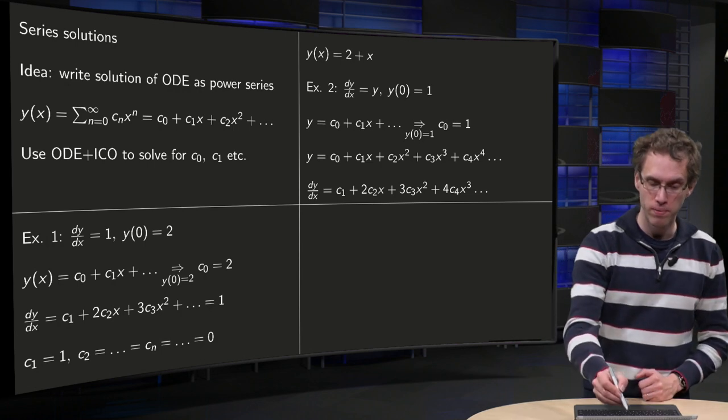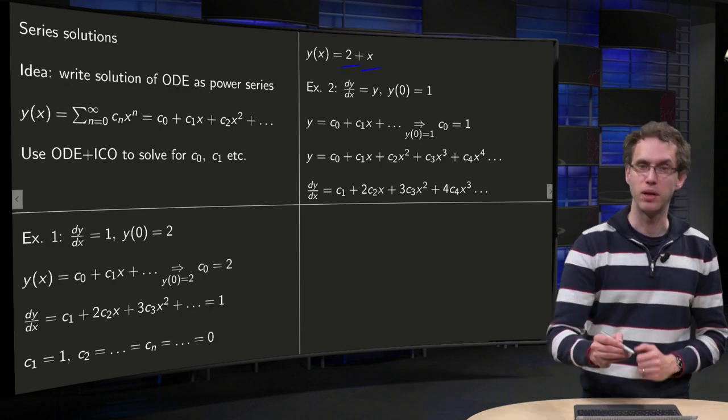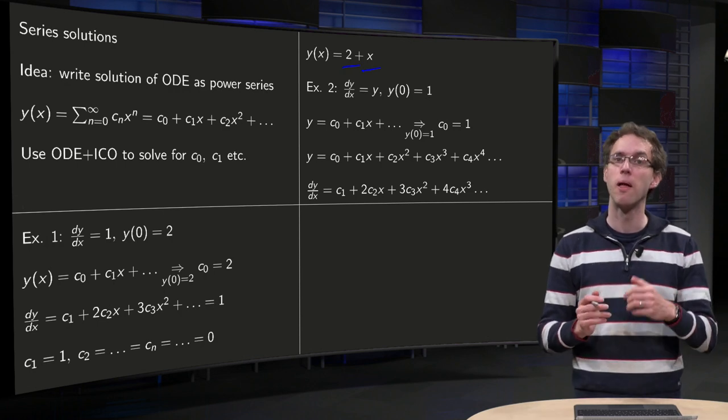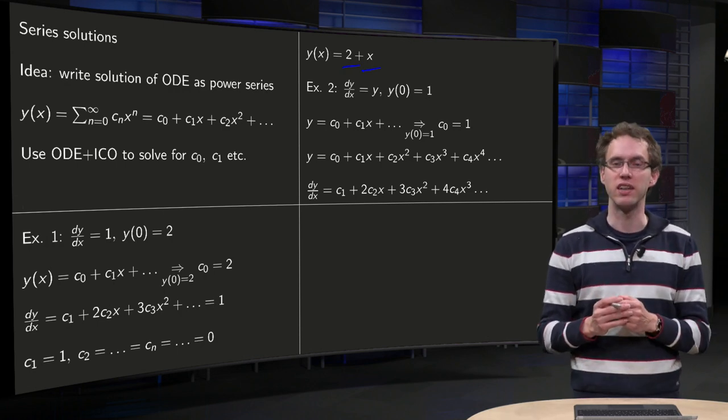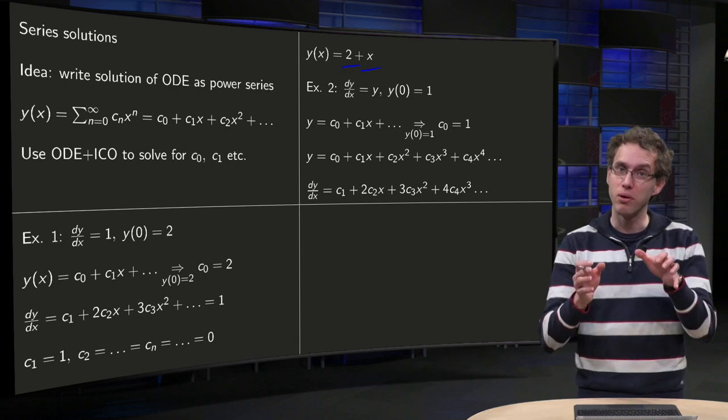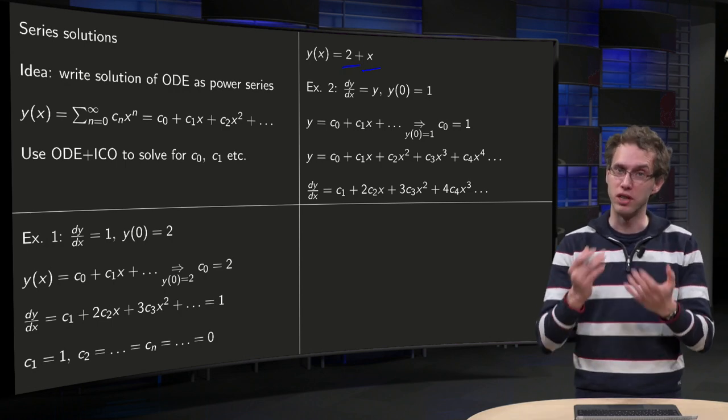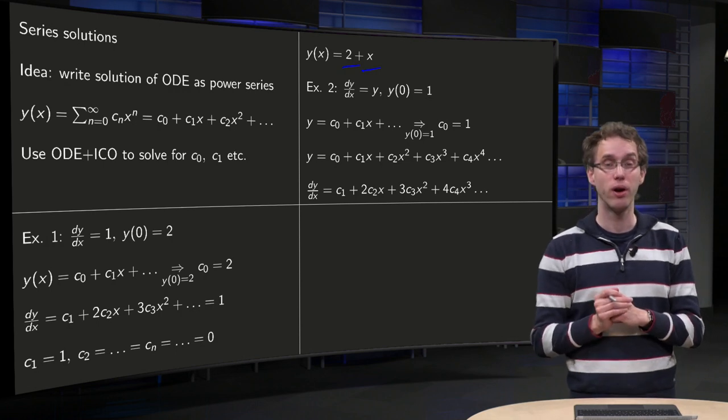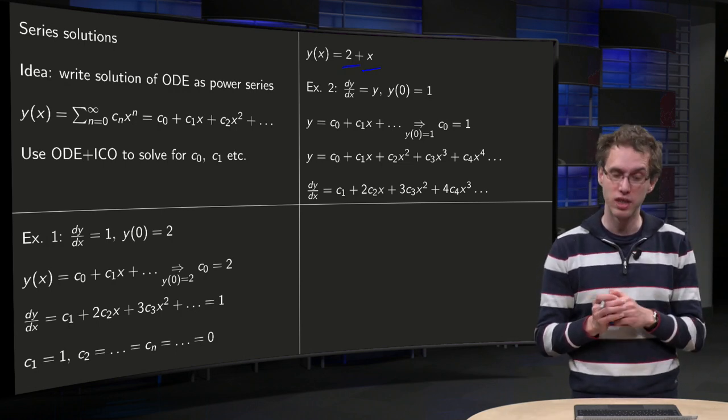So then we summarize, we have our series solution as c0 plus c1 times x, and all the others are 0, so y(x) equals 2 plus x. Of course you could find this by direct integration as well, but now you see how the method works. Use the initial condition and then use the differential equation to find all your coefficients cn.